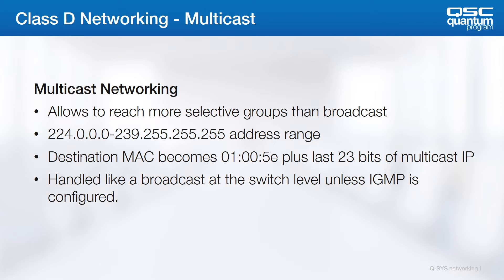The multicast address range is specifically defined from 224.0.0.0 to 239.255.255.255. The destination MAC address of a multicast stream is calculated with a special OUI, 01-00-5E, so that switches and routers know to handle this as a special case.